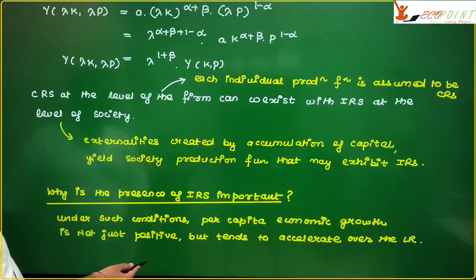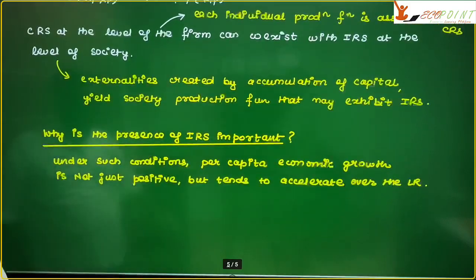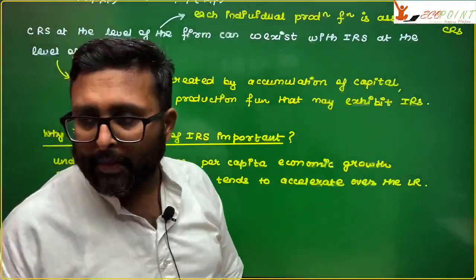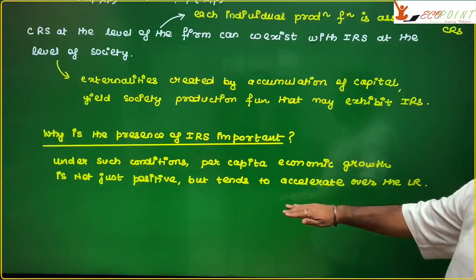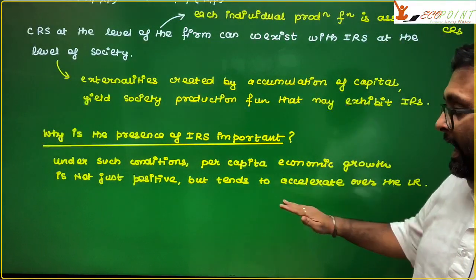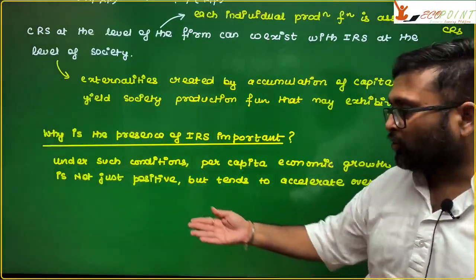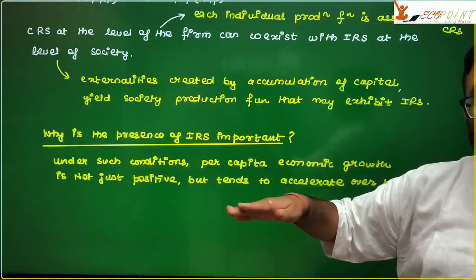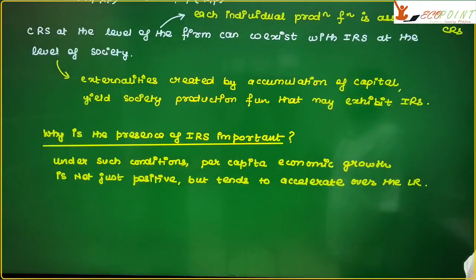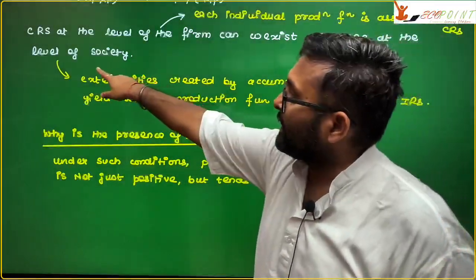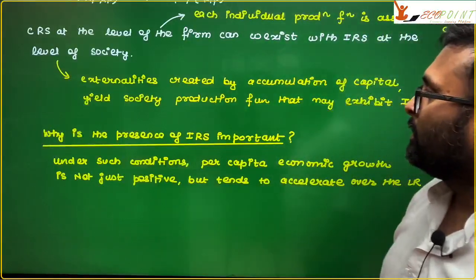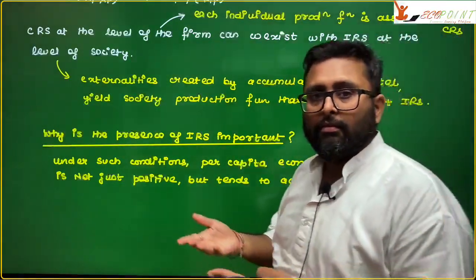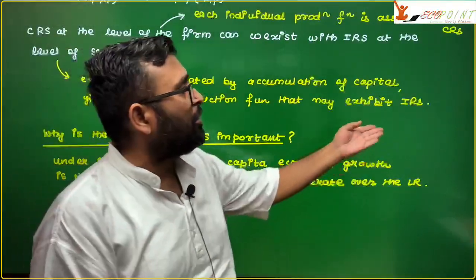Why do you think that this IRS is very important? Because in that case, when you have IRS, then what happens is that per capita economic growth can be sustained over a very long time. And it can accelerate also. Not only it will be positive, but it can also accelerate over time. CRS is the same level. And one more point, that in case of social production function, externalities, which are created by accumulation of capital, they will generate that kind of social production function, which is going to exhibit IRS.